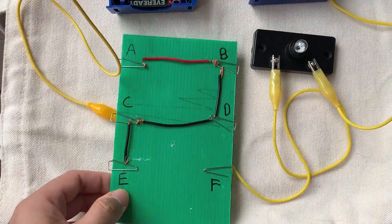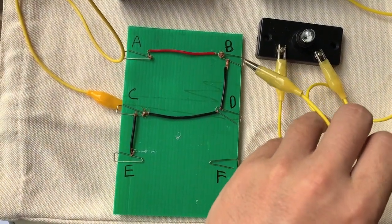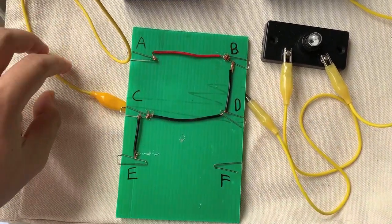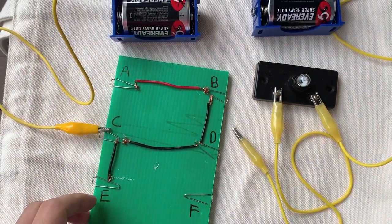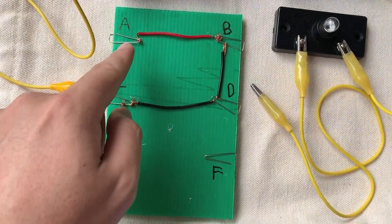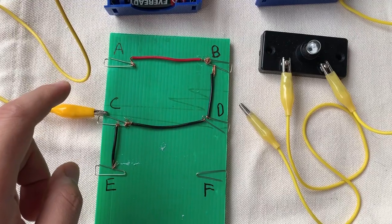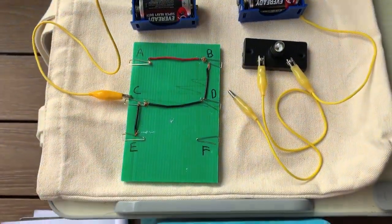I will clip the crocodile clip onto either of the paper clips of the card and we'll see whether the bulb lights up. The bulb will light up if it's a closed circuit. The bulb will not light up if it is an open circuit. Let's take a look.